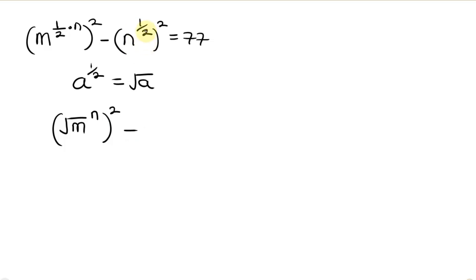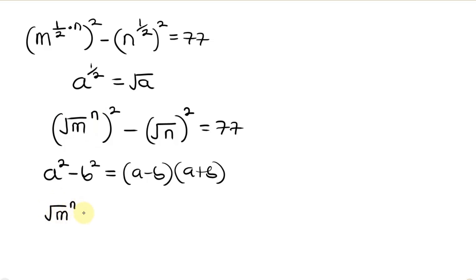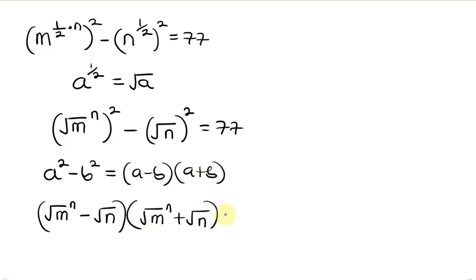Minus — this can be written as the square root of n, raised to the power of 2, equal to 77. Now we have an expression in the form of difference of two squares. Difference of two squares: a squared minus b squared is the same as a minus b times a plus b. So this will be the square root of m to the n minus the square root of n, times the square root of m to the n plus the square root of n, equal to 77.